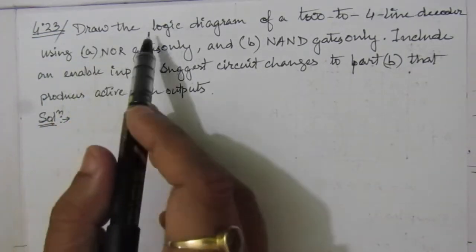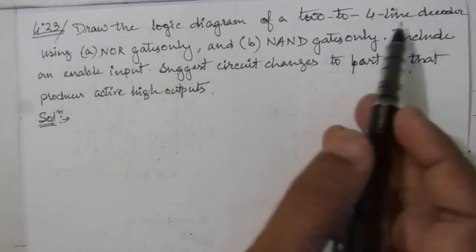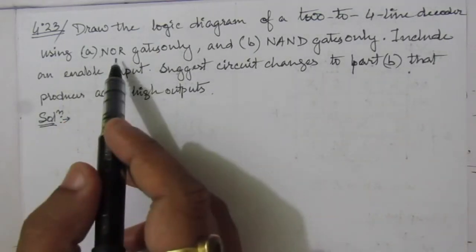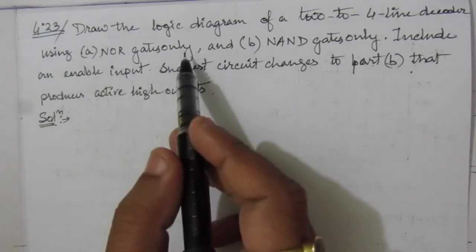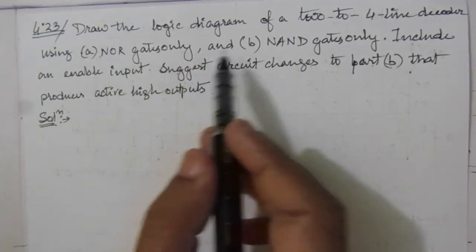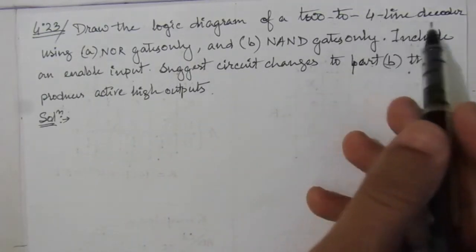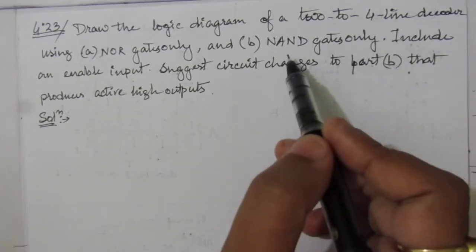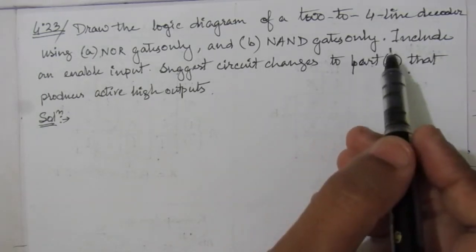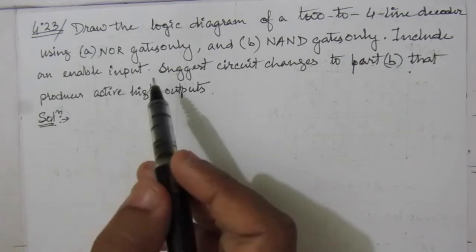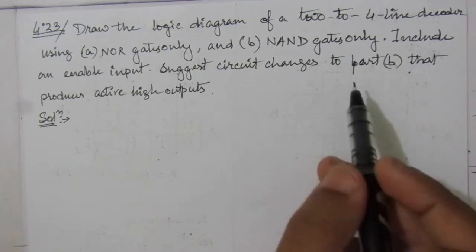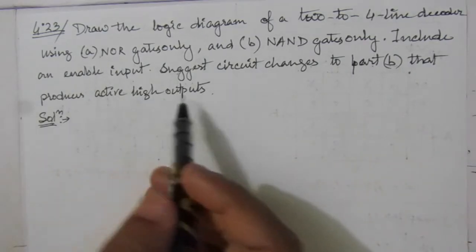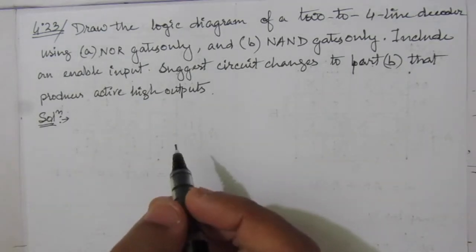The problem is: draw the logic diagram of a 2-to-4 line decoder using NOR gates only. In the first case, we have to use only NOR gates to realize a 2-to-4 line decoder. In the second case, we have to use NAND gates only, and we have to include an enable input. Also, suggest circuit changes to part B that produce active high outputs.